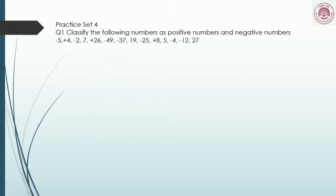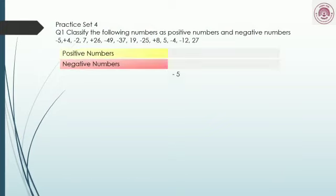Before doing the practice, always remember: on a thermometer or when recording temperatures, temperatures above zero degrees are positive and below zero degrees are negative. Similarly, height above the ground is positive, and depth under the ground or below sea level is considered negative. Now let's solve the exercise.